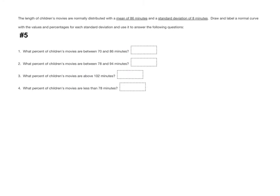Here is number five off your homework assignment. The length of children's movies are normally distributed with a mean of 86 minutes and a standard deviation of 8 minutes. Draw and label a normal curve with the values and percentages for each standard deviation and use it to answer the following questions. When you're solving problems that involve the normal distribution, the first step you should always do is draw that standard normal curve. I'm going to draw a number line with the mean in the middle, and then we need three standard deviations on each side of the mean.